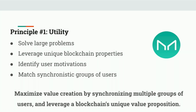The first principle is utility. The first point I want to make is that you should be solving large problems. You want a large total addressable market — the number of users you're able to serve and the degree to which you're able to serve them should be a primary focus when maximizing utility for your tokenomics.